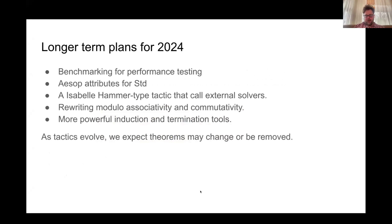Longer term, stepping back: I think we want benchmarking for performance testing. There's been a lot of discussion about what features we should have, what implementations and interface choices to make — for example there's a PR for union find — and having robust benchmarking to look for regressions is top of mind. Integration with AESOP, going beyond SAT to full integration with something like a hammer-style tactic that can call multiple solvers including first-order theorem provers.